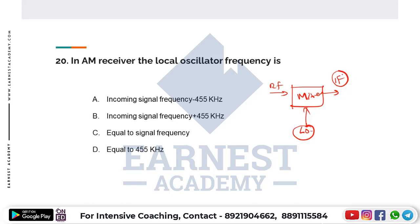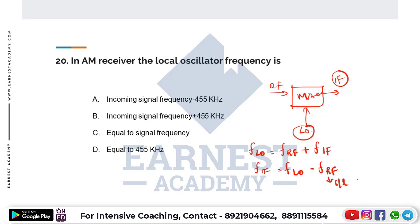The IF frequency is the difference of local oscillator frequency minus RF frequency. Therefore, the frequency of the local oscillator equals the frequency of the RF signal plus the intermediate frequency: FLO = FRF + FIF.